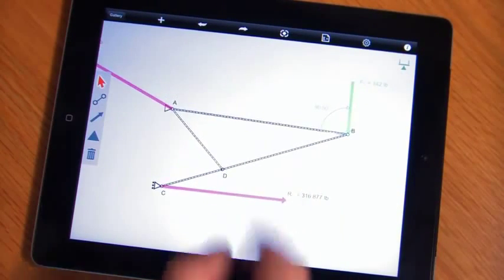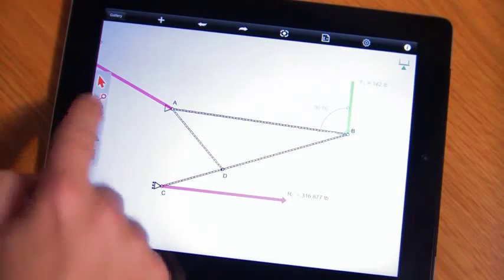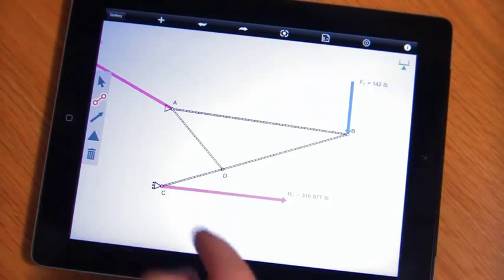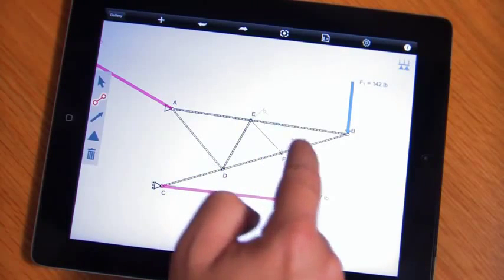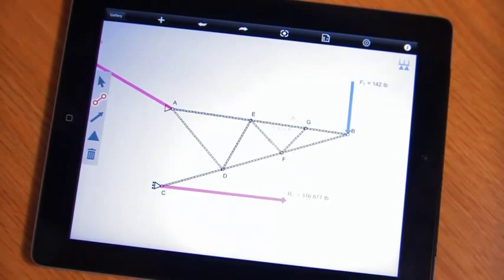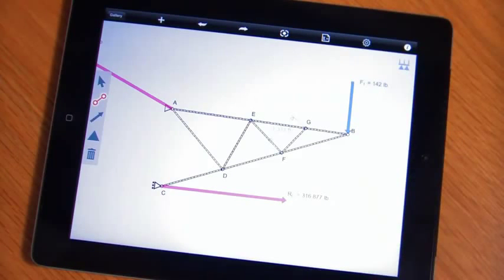One of the other powerful capabilities and innovative approaches we've used in this product is the ability to solve over-constrained systems. If we were to go in here and add some additional support members, we can see that the degrees of freedom indicator is now giving us an indication that we have an over-constrained system.